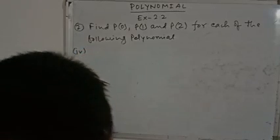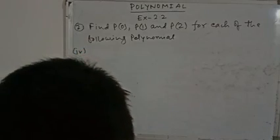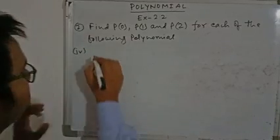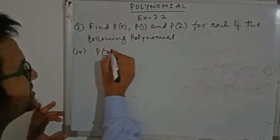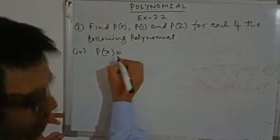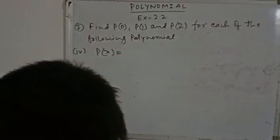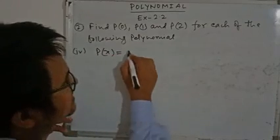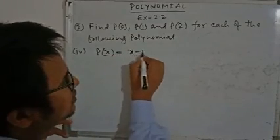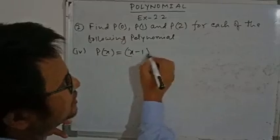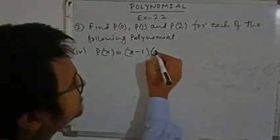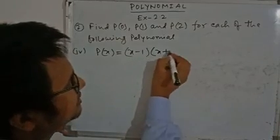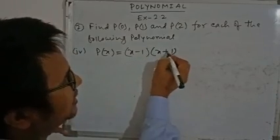Now question number 4. What is given here: P(X) equals X minus 1 into X plus 1.